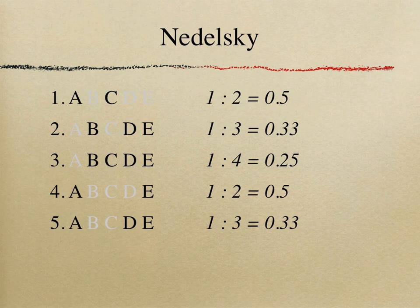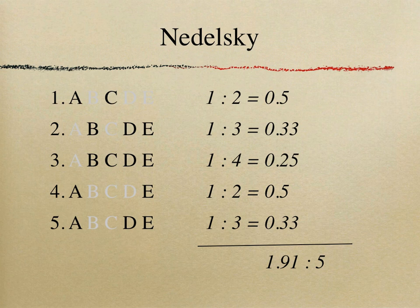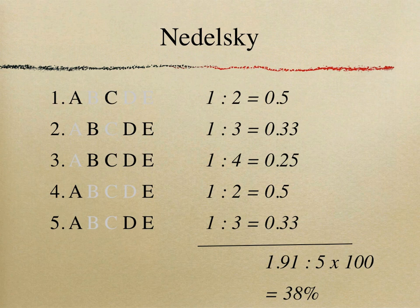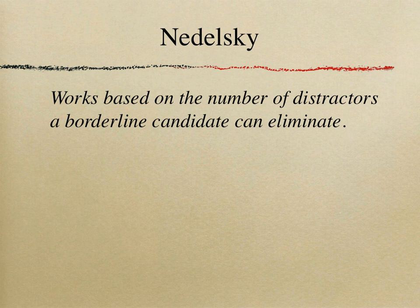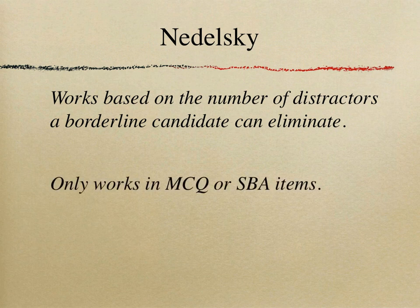Adding up all those odds gives 1.91. Dividing 1.91 by 5 questions and multiplying by 100 gives a pass score of 38% for that paper. The Nedelsky method is an absolute method based solely on the number of distractors. Its only limitation is that it works only for multiple choice or single best answer items — it cannot be used for any other examination or assessment type.